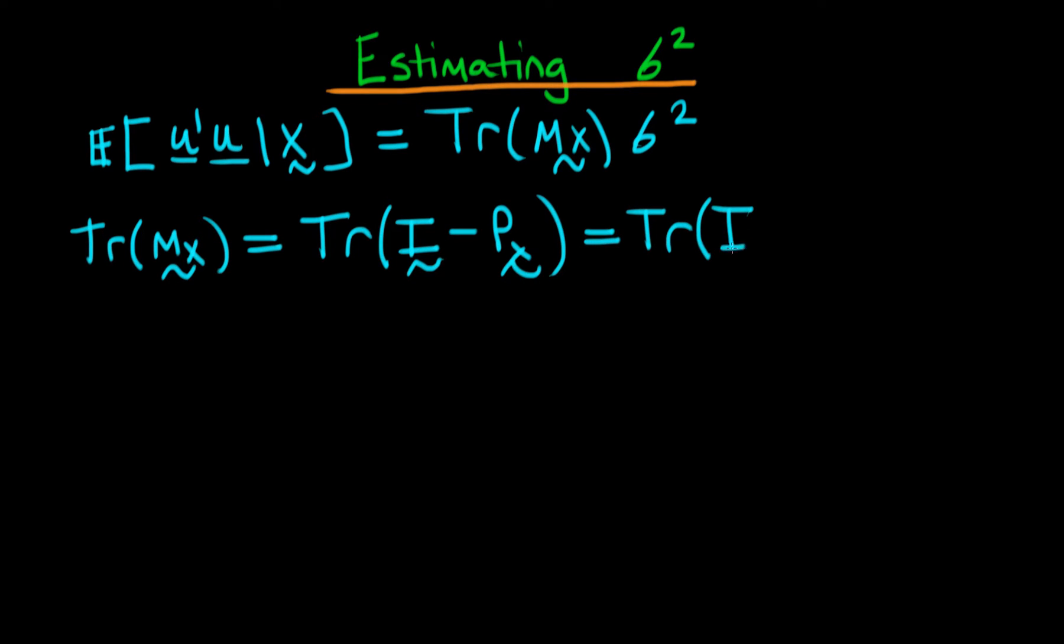The trace of the identity matrix is easy enough—it's just n because we've got n ones on the diagonal. Then we're left with minus the trace of px.